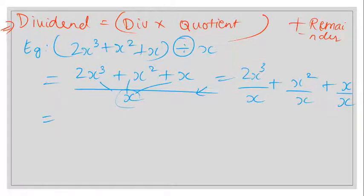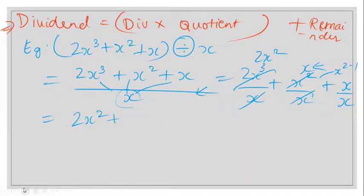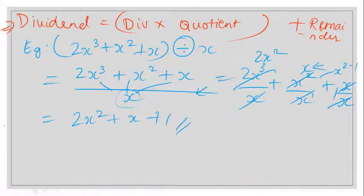2x³ ÷ x = 2x². Then x²/x = x, because x² ÷ x = x^(2-1) = x. And x/x, these cancel, giving 1. So the answer is 2x² + x + 1. This is how we've usually been doing it.